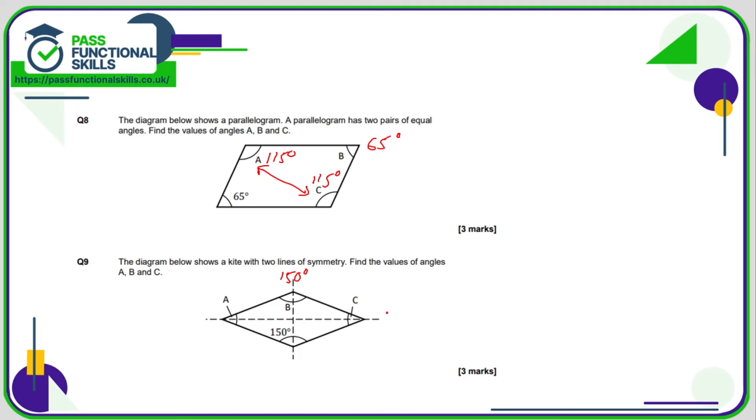Therefore A and C are 60 degrees in total. Since A and C are identical, they are both 30, because 60 divided by 2 is 30. So A is 30 degrees, and C is 30 degrees.